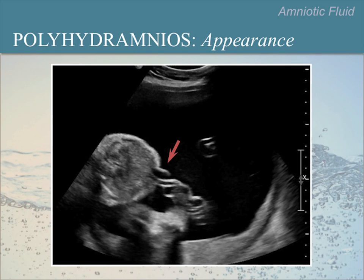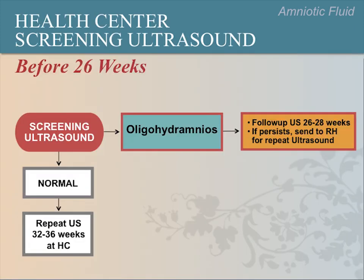Algorithms may vary somewhat according to local practice — consult your referral hospital for the algorithms appropriate for your practice. Note that in our algorithm, RH stands for referral hospital. If a patient comes to your health center at 20 weeks and is diagnosed with polyhydramnios, ask her to come back for another ultrasound in two weeks. Often, polyhydramnios will resolve. If the polyhydramnios is worse in two weeks, refer the patient to the hospital for evaluation.